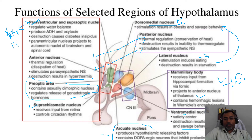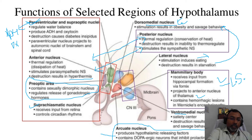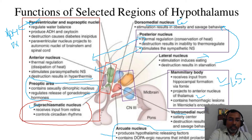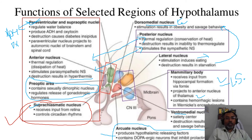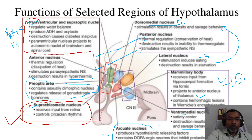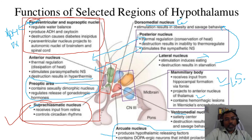The circadian rhythm is regulated by which portion of the hypothalamus? The suprachiasmatic nucleus receives input from the retina and controls the circadian rhythm. Other nuclei like the paraventricular and supraoptic nuclei regulate water balance — they produce ADH and oxytocin, and their destruction causes diabetes insipidus.